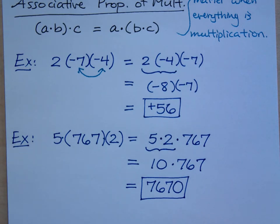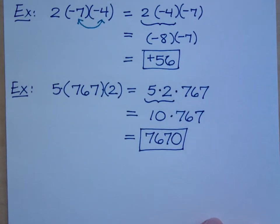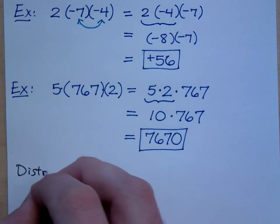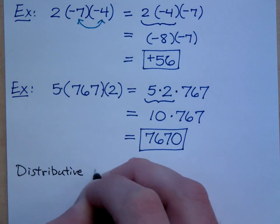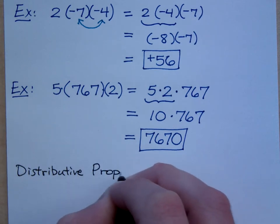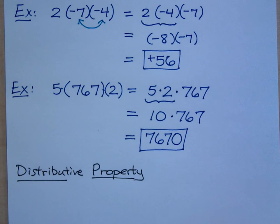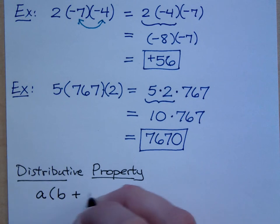There's another property that we see with multiplication, and that's the distributive property. So the distributive property will distribute multiplication across additions. So you have to have something that looks like this.